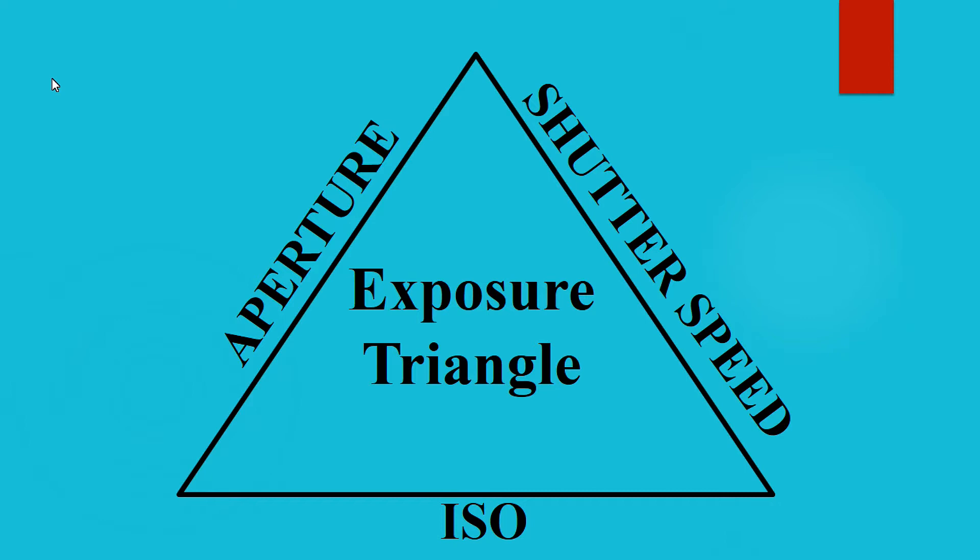So if there is a shutter speed adjustment, or ISO is changed, these three are at equal distances. If you want to change those equal distances, we will see an example. The exposure triangle is the exposed triangle.